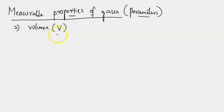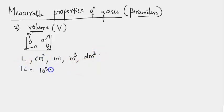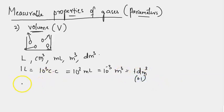The second parameter is volume, with dimensional formula V. Volume is the space occupied by a substance. For gases, intermolecular forces are very weak, so particles move randomly in all directions and occupy as much space as is available. Volume units include liter, centimeter cube (cc), milliliter (mL), meter cube, and decimeter cube. One liter equals 10³ cc or 10³ mL, which equals 10⁻³ meter cube or one decimeter cube. One meter cube equals 10³ liters or 10⁶ mL.